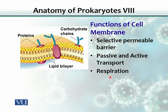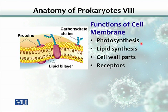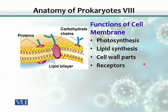The cell membrane also performs many other functions. Respiration is one of them, and photosynthesis is another. Lipid synthesis also occurs in bacteria at the cell membrane. Cell wall components are made in the cell membrane and then secreted to the outside. As we saw, gram-positive and gram-negative bacteria have cell walls. The cell membrane also has many receptors.